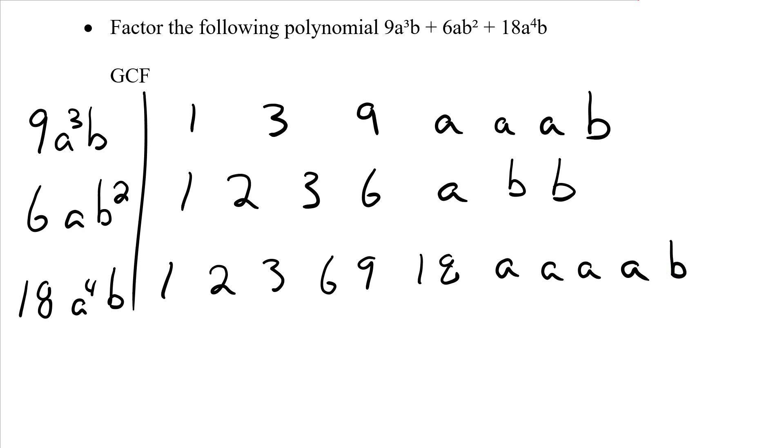Now we look at what's common to both sets. 1's common, 3's common, and that's it. So my greatest number is going to be 3. My letters: I've got an a, a, and a - so that's common. And I've got a b, b, and b - so that's common. So in this case, my greatest common factor contains both numbers and letters: 3ab.